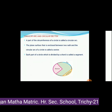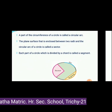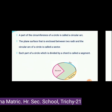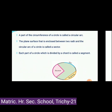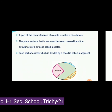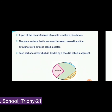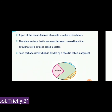The next topic is circular arc and sector. A part of the circumference of a circle is called a circular arc. The plane surface enclosed between two radii and the circular arc of a circle is called a sector. Each part of a circle which is divided by a chord is called a segment.